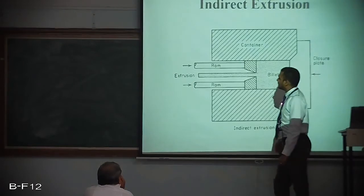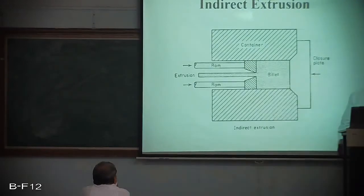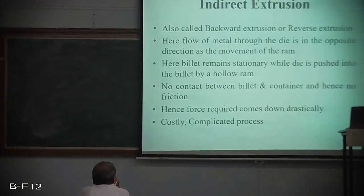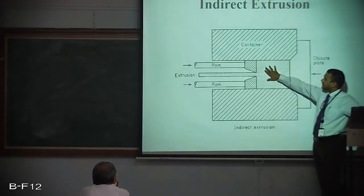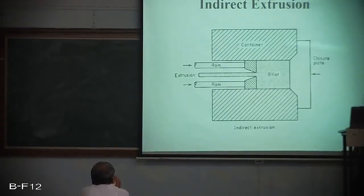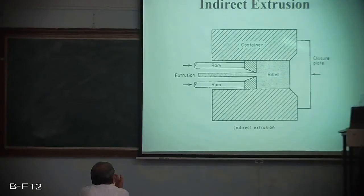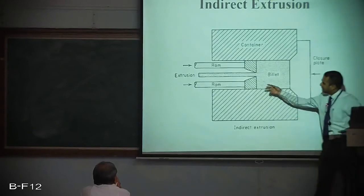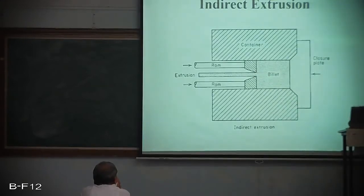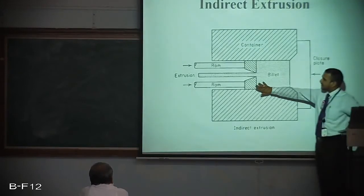In indirect extrusion, the billet remains stationary, and hence the force required is much lower compared with direct extrusion. But the ram is not a complete solid block — it has the die. So careful considerations have to be taken while designing the ram.